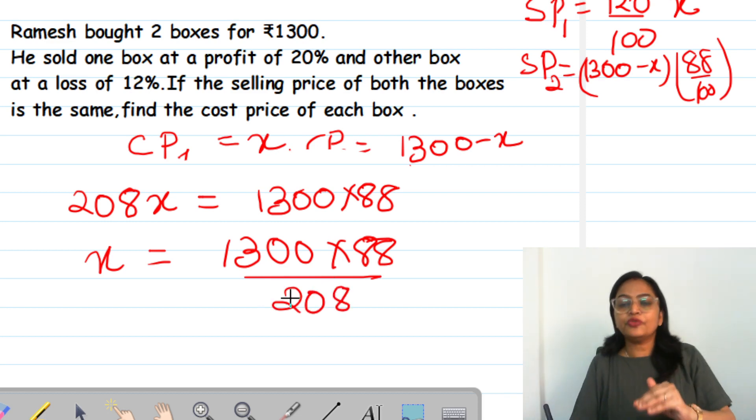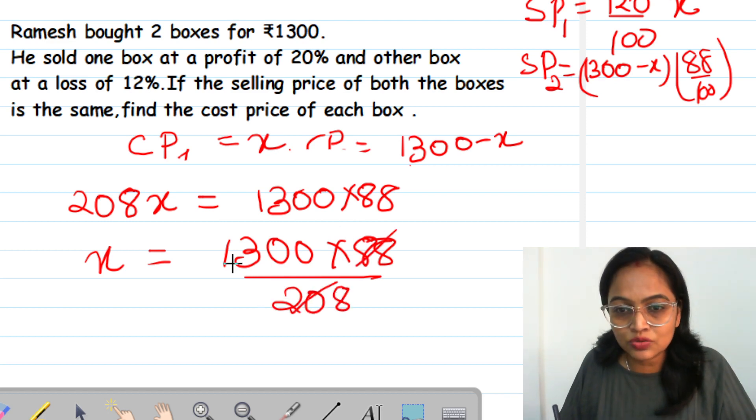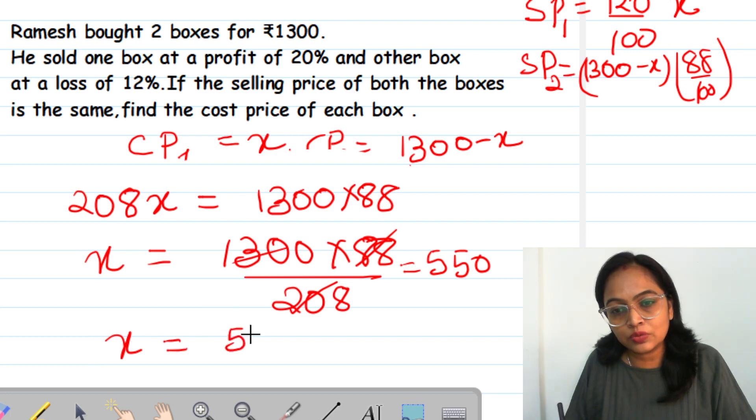Now if I simplify it, I will cancel out everything. It will come out as 550. You can do the calculations on your own. So X will be equals to 550.